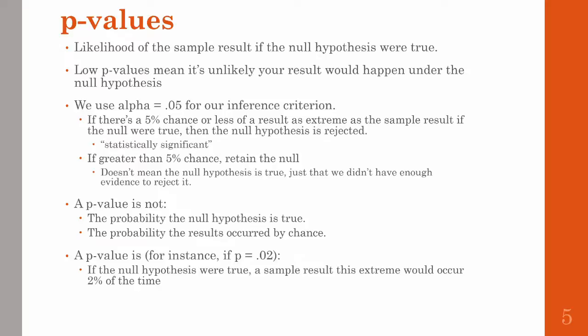Something is statistically significant if your p-value is less than alpha, so less than 0.05. If it's greater than 0.05, then we fail to reject the null hypothesis. This doesn't mean that we prove the null hypothesis — it just means that we didn't have compelling evidence to reject it. A couple notes about p-values: they are not the probability the null hypothesis is true, and they are not the probability the results occurred by chance. So definitely don't say those kinds of things when you talk about p-values.